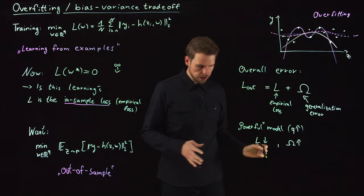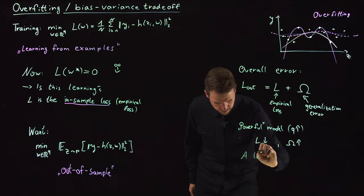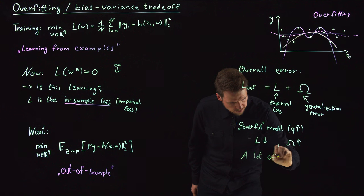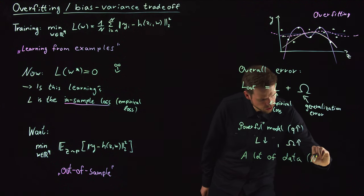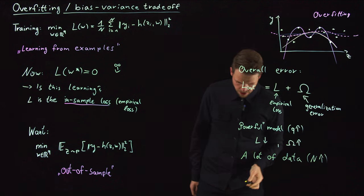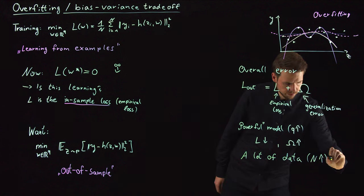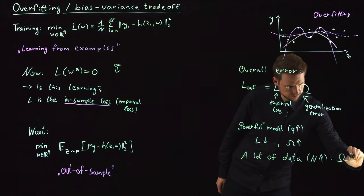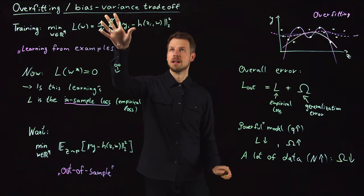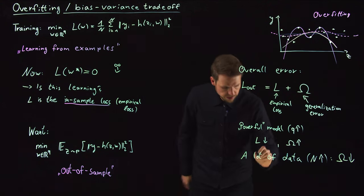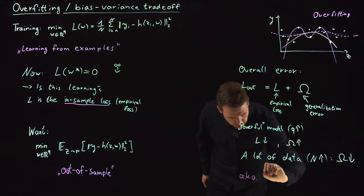The other way around, if you have a lot of data, so the N goes up, what you will find is that omega goes down again. What we call this - and this is the second part of the title - this trade-off is known as the bias-variance trade-off.